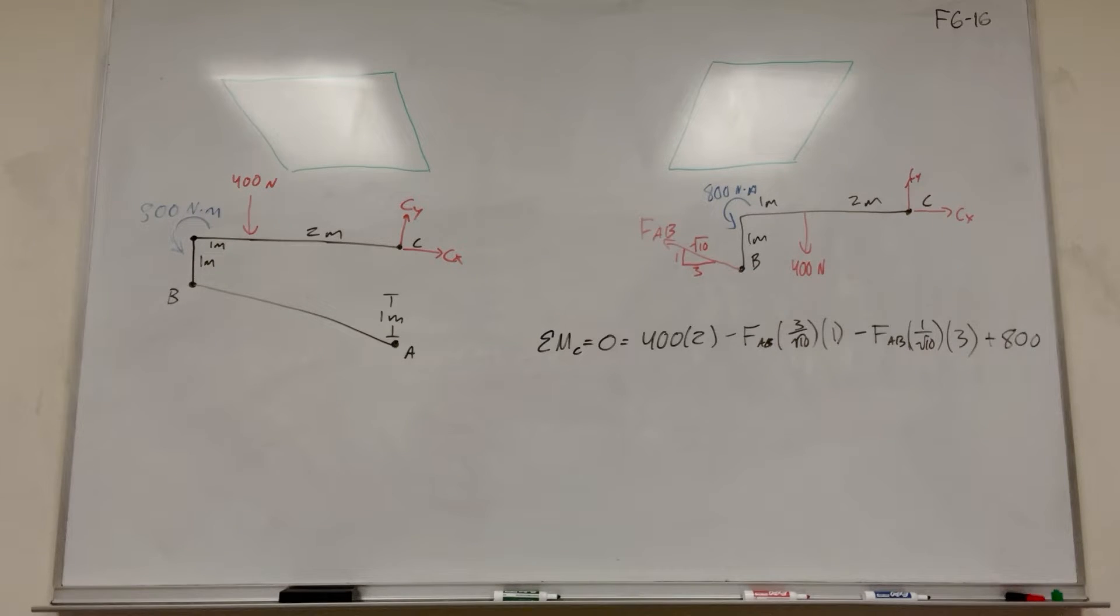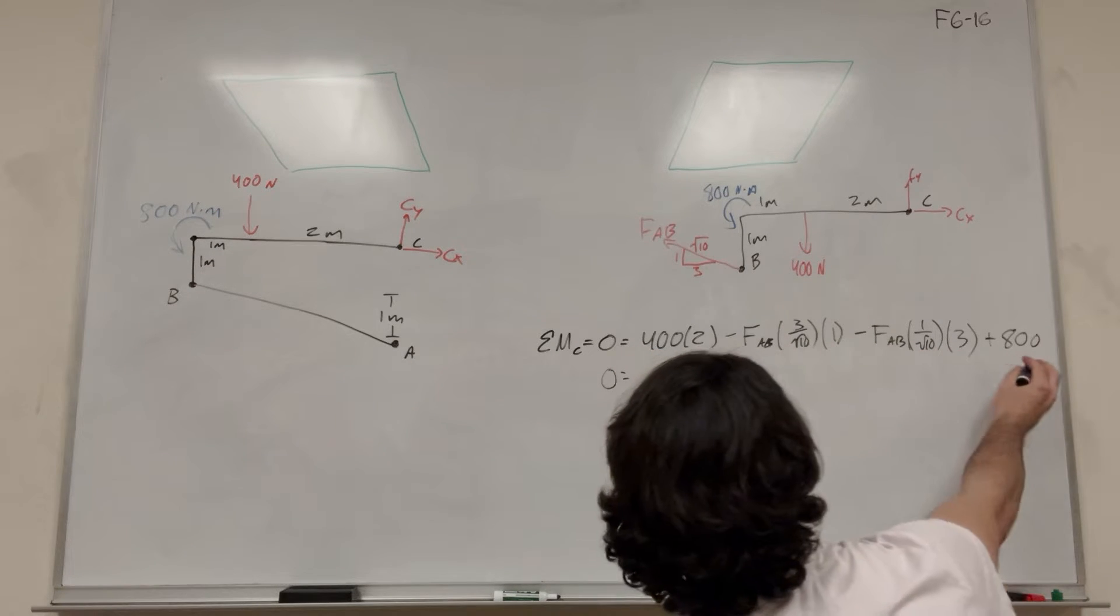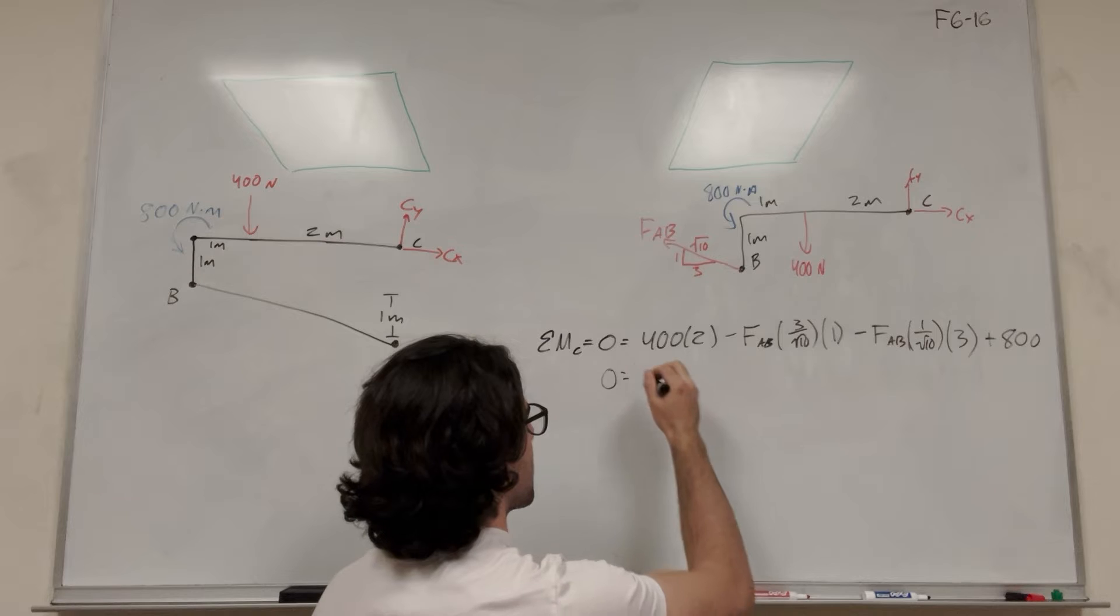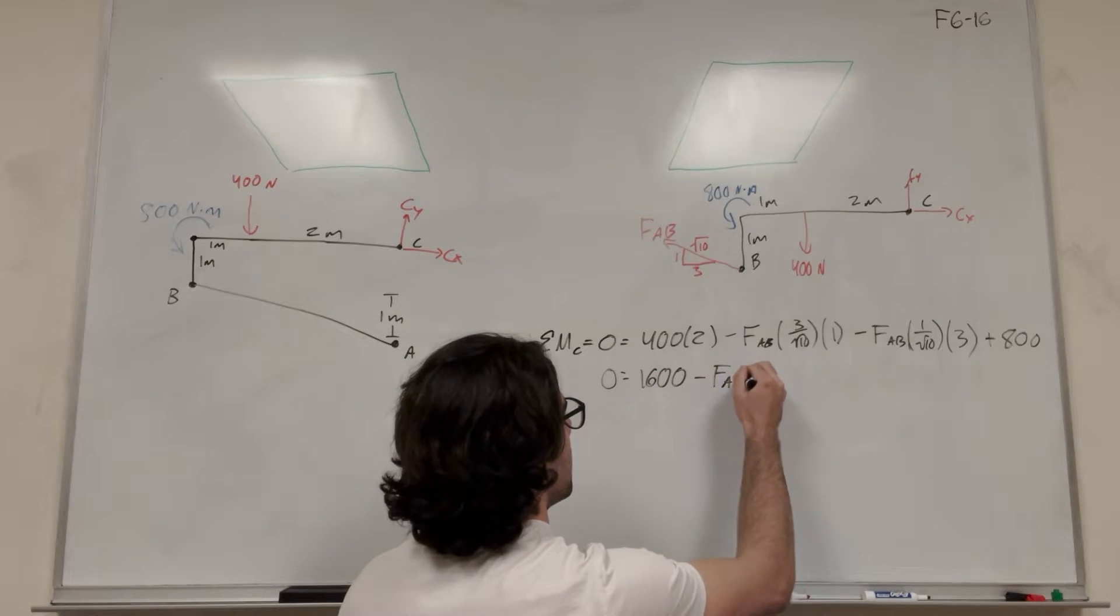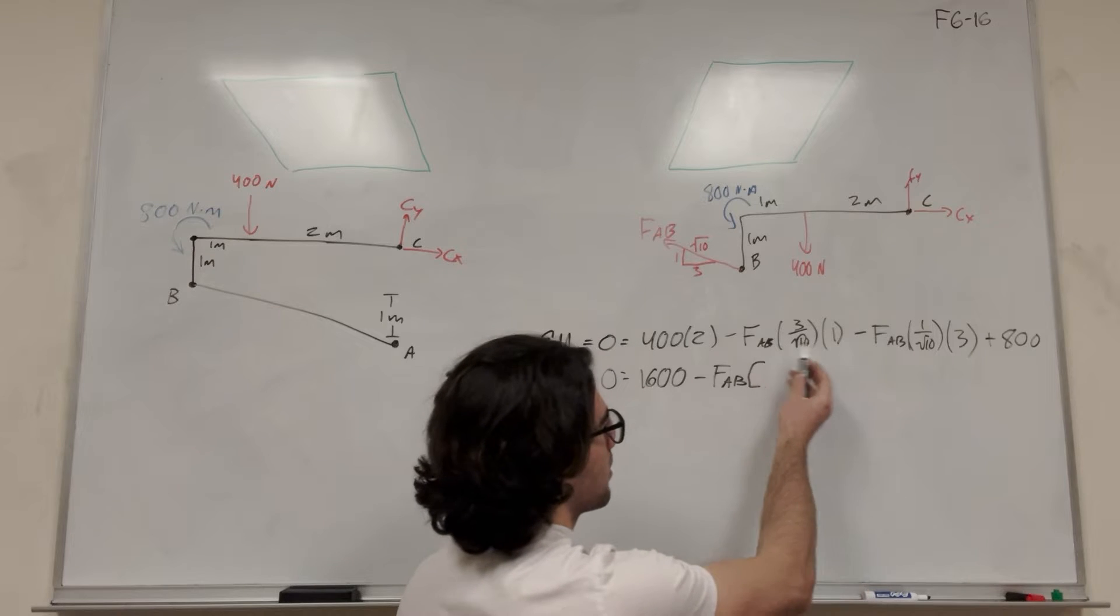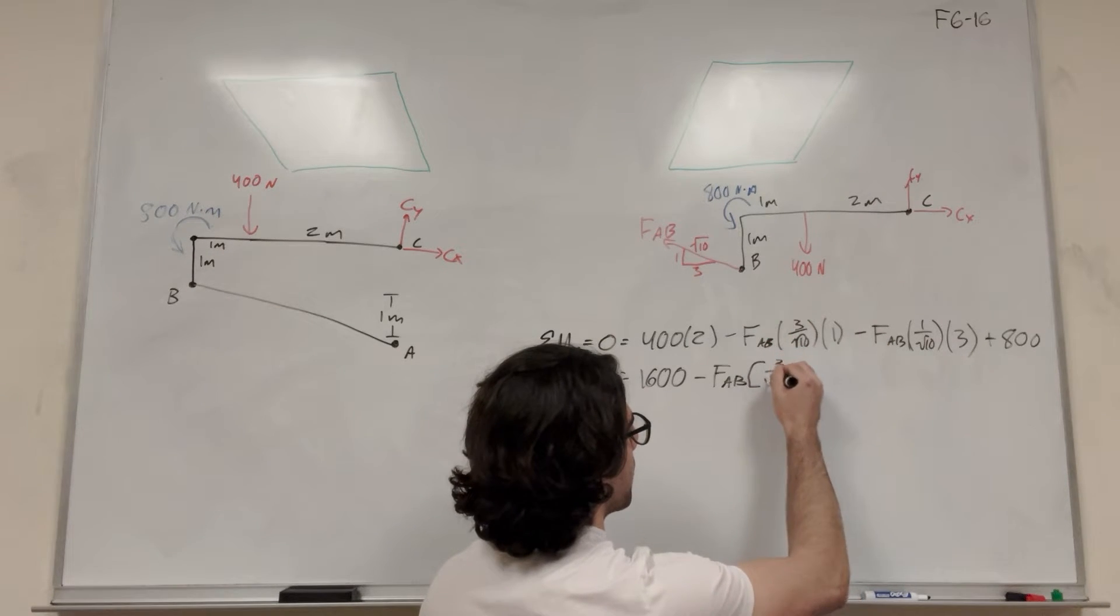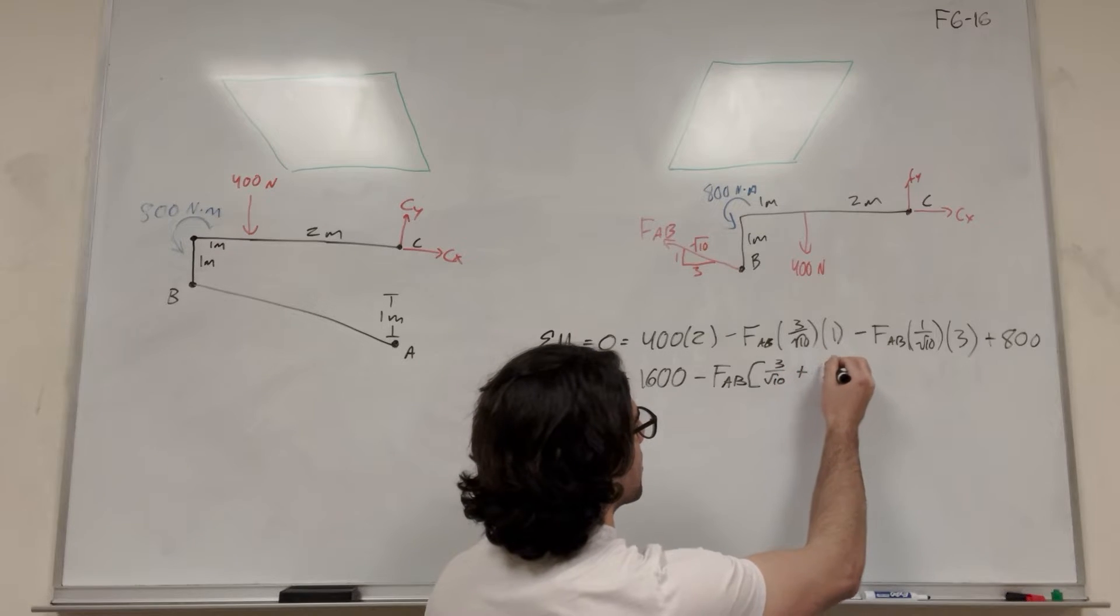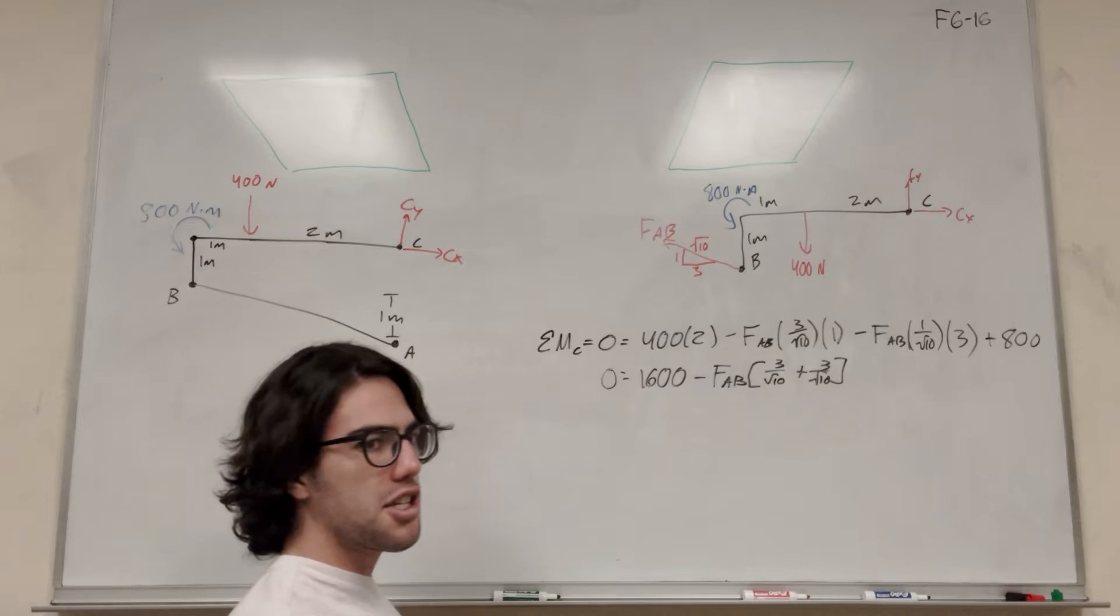So of course we want to group up the force ABs. So let's keep this equal to zero. The 400 and the 800 are going to add together to get 1600. And then minus force AB. We're going to factor out the force AB. So these two are going to factor out. And it's going to be 3 over square root of 10 plus 3 over square root of 10.